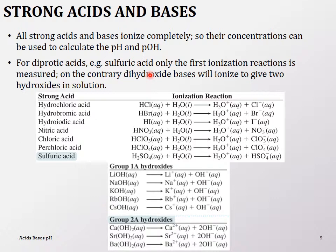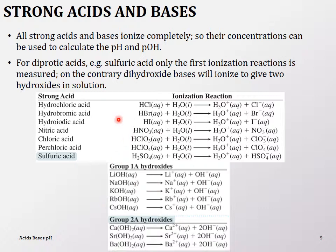For diprotic acids like sulfuric acid, usually only the first ionization is measured. So for H₂SO₄ just calculate pH as given — if it says 2 molar sulfuric acid, treat it as a diprotic acid. For bases with 2 hydroxides — such as calcium hydroxide or magnesium hydroxide — both hydroxides ionize completely, so you must double the concentration when calculating pOH.